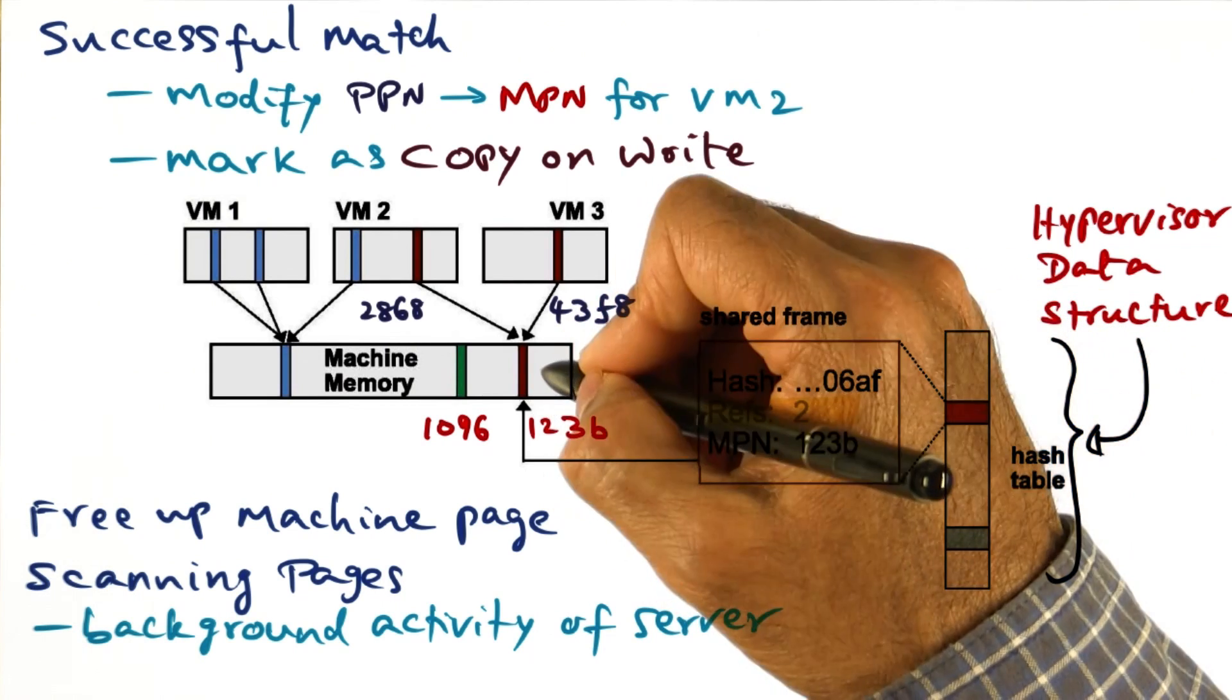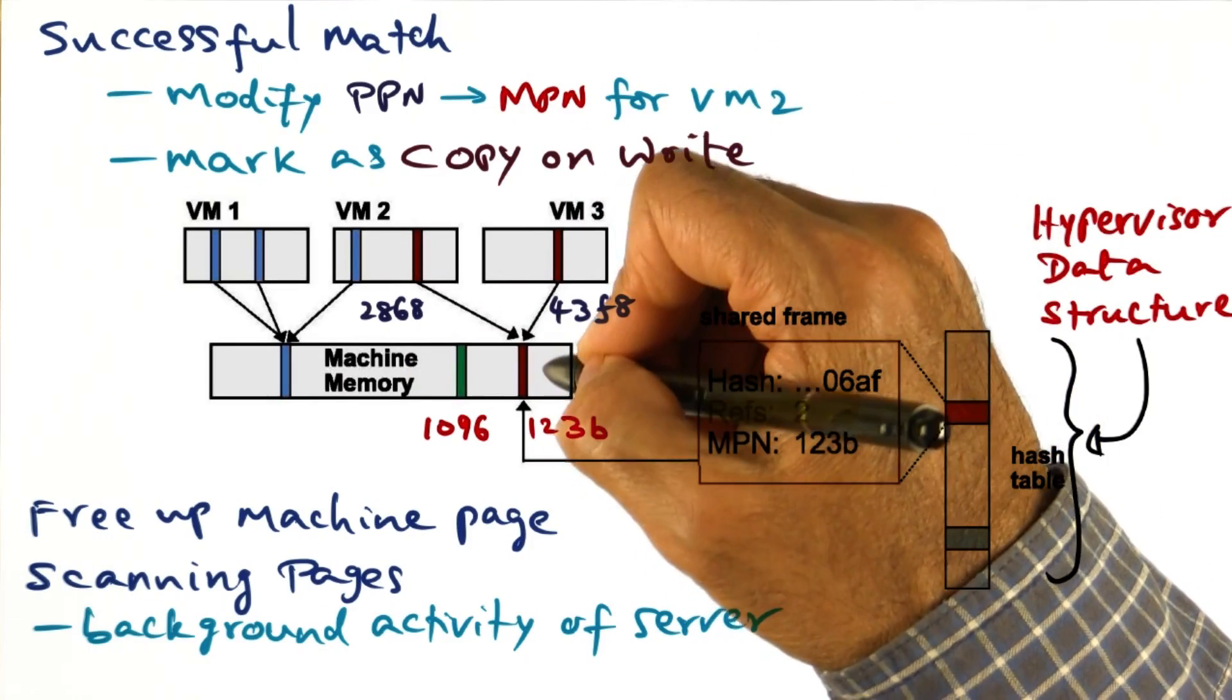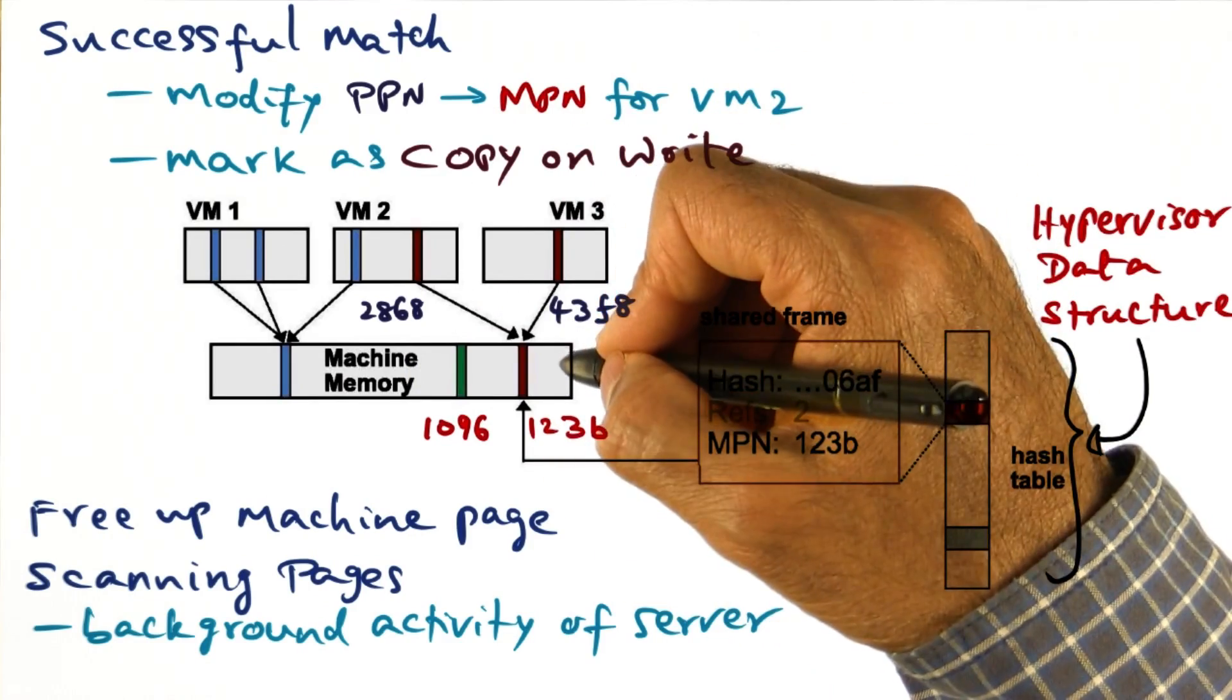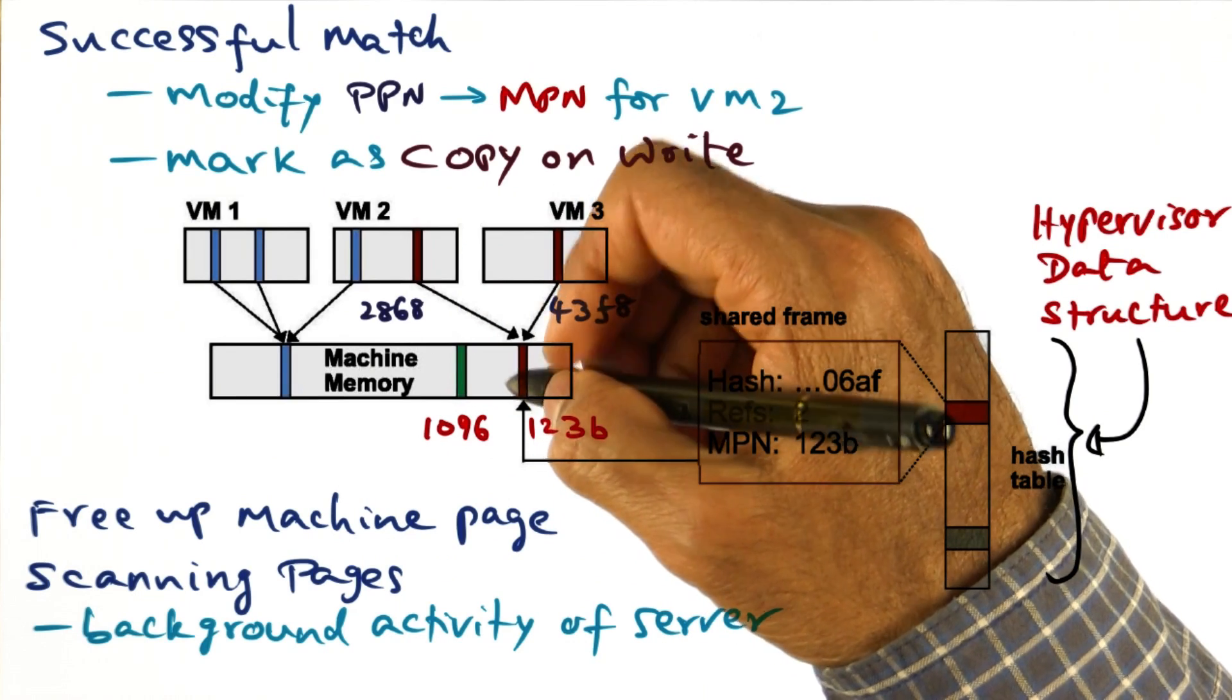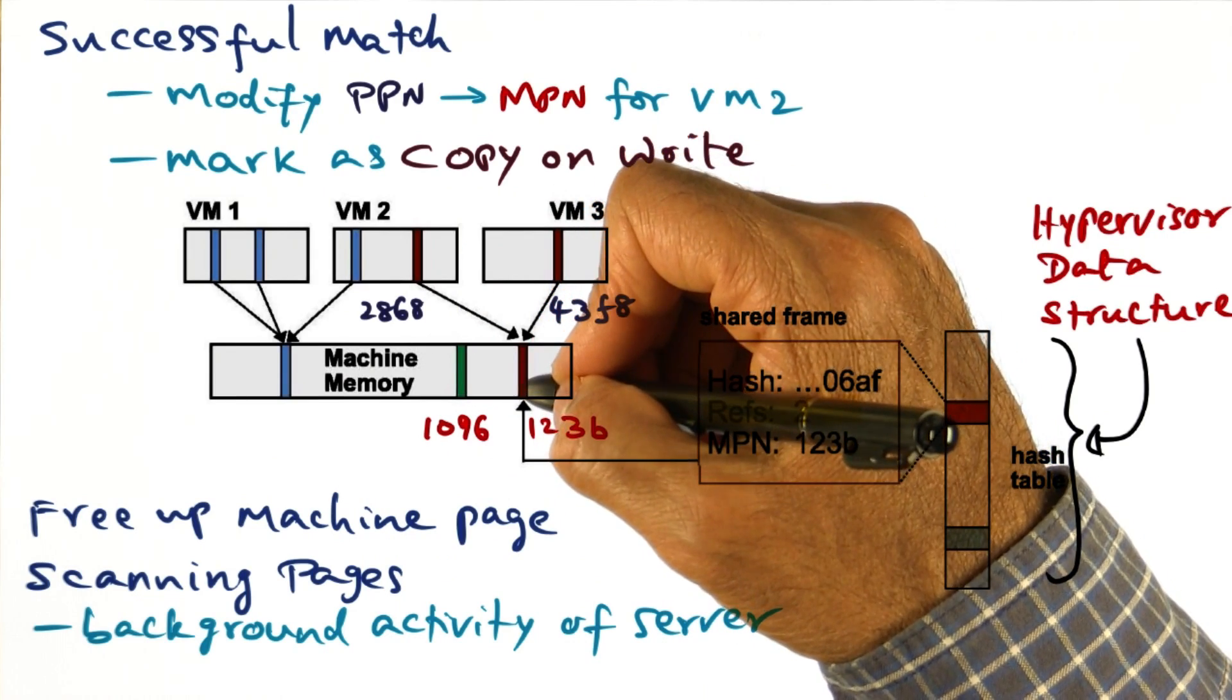Looking for such matches and mapping the virtual machines to share the same machine page and freeing up machine memory for allocation by the hypervisor.